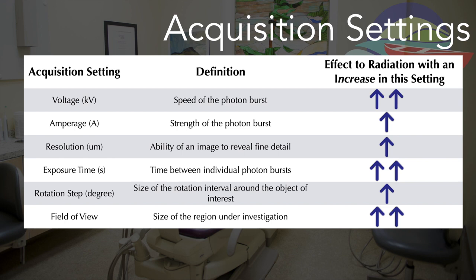While each of these acquisition settings can be adjusted, using the factory settings on our CBCT as default often provides the best image quality at the lowest radiation dose. Therefore, we often don't change the voltage, the amperage, the exposure time, and the rotation step. The resolution can be adjusted, but we have the most control over the field of view that we ought to use.